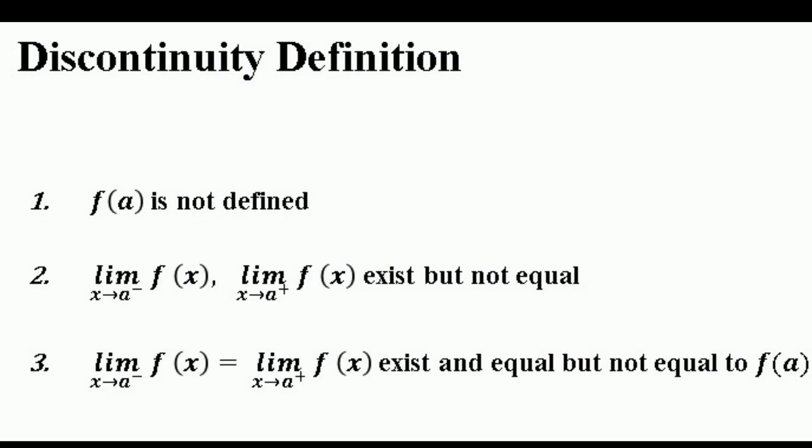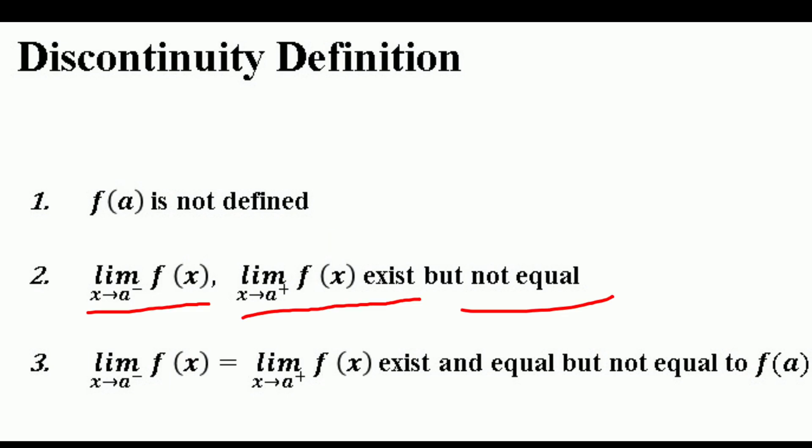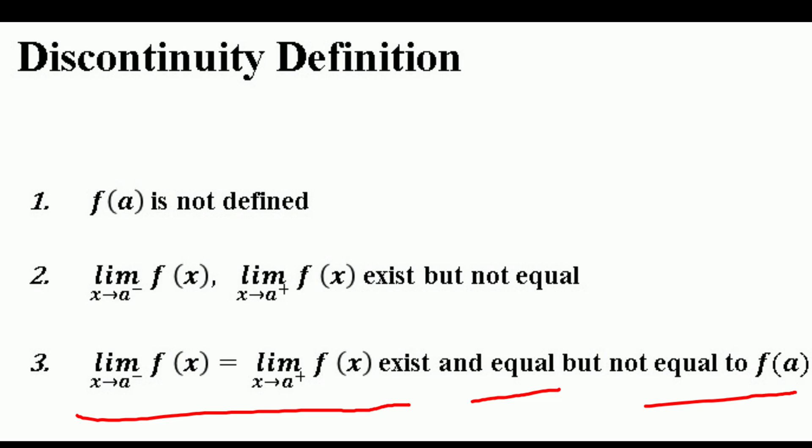The two types are removable discontinuity and irremovable discontinuity. A function is said to be discontinuous when either f(a) is not defined, or the left-hand limit and the right-hand limit both exist but are not equal, or the left-hand limit equals the right-hand limit but it is not equal to f(a). In these three cases we can say that a function is discontinuous.